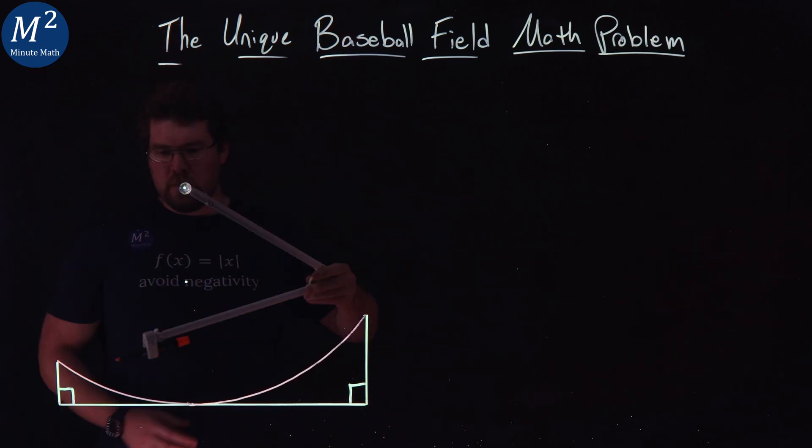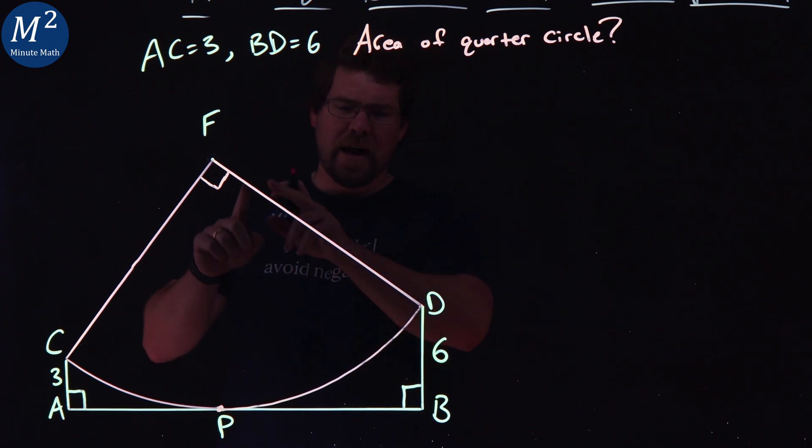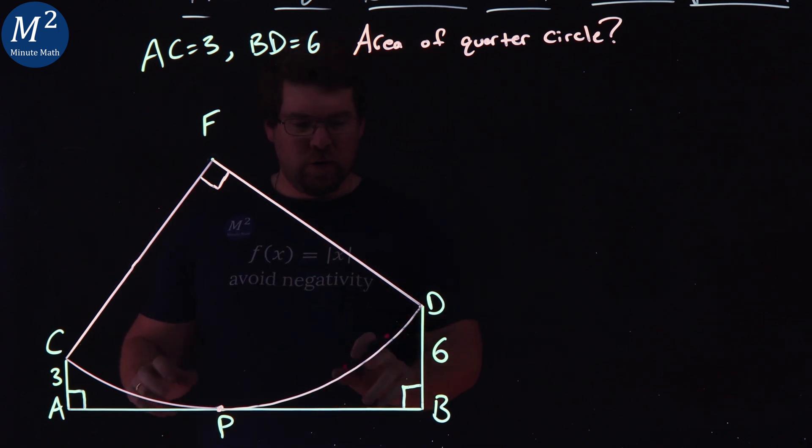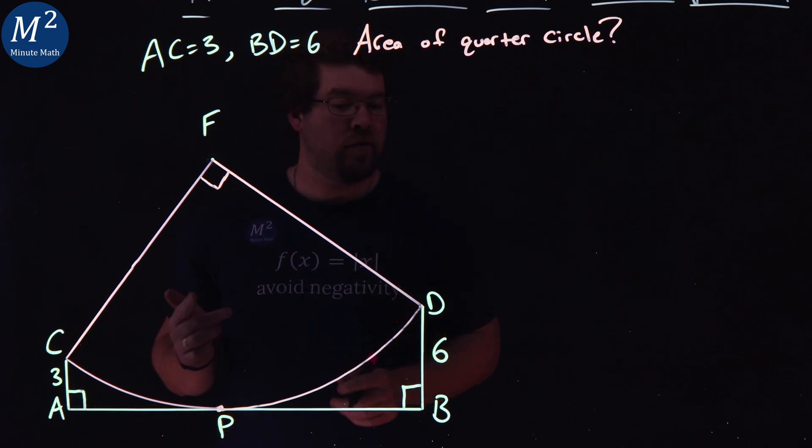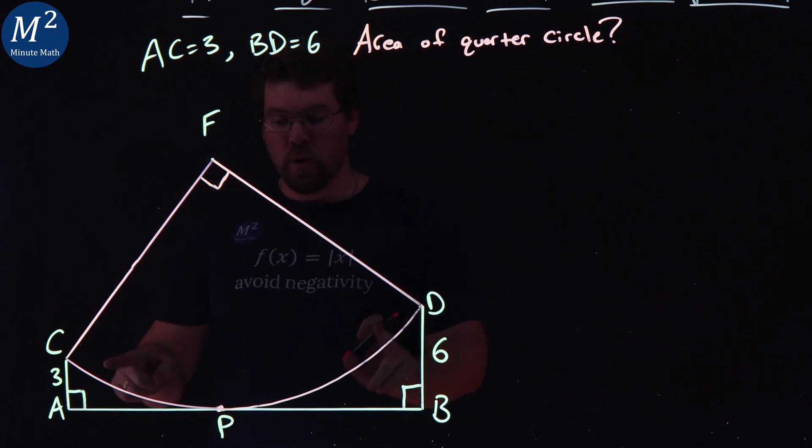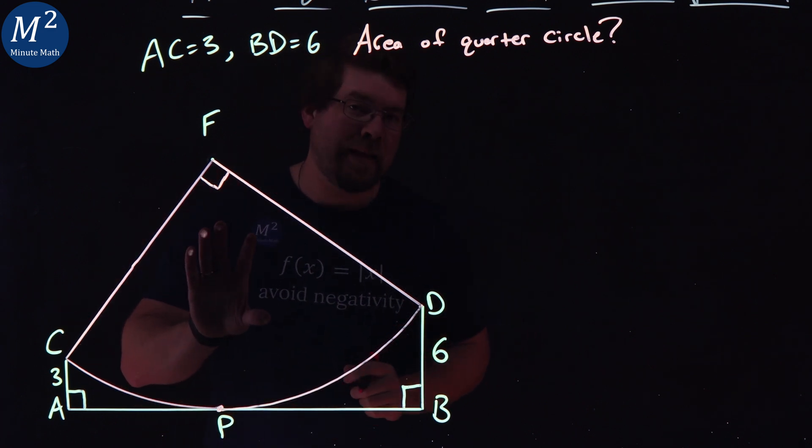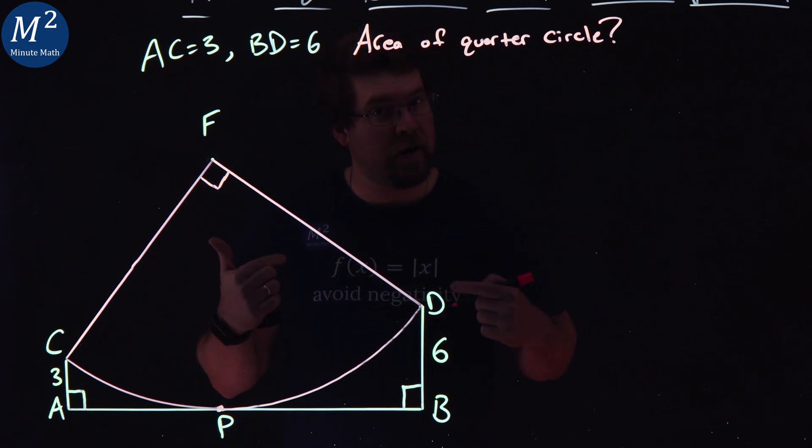The unique baseball field math problem. We have our shape right here. It kind of looks like a baseball field - big dirt area, little grass area. We have some values that are given to us: AC is length of three, BD is length of six. We have a quarter circle that kind of slid over a little here, and we want to find the area of that quarter circle. Pause this video to see if you can figure it out first.